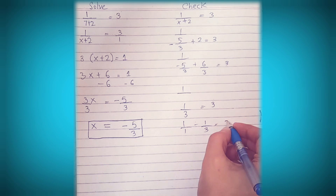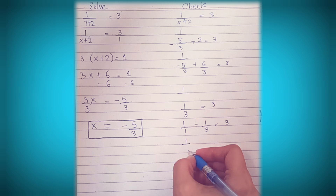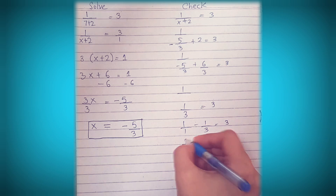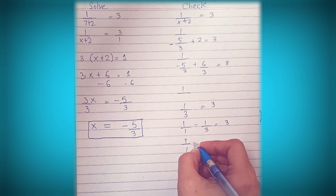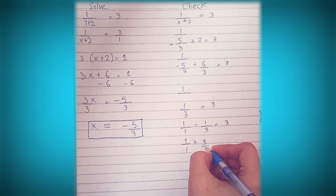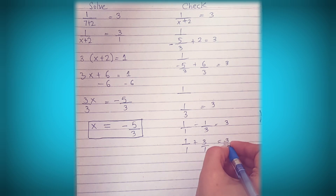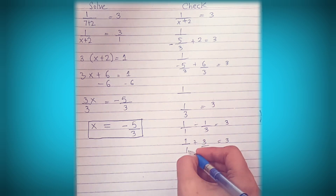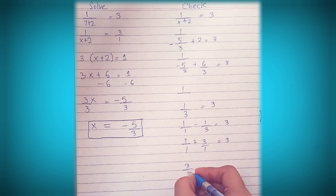So now we have 1 over 1 third. This big line means division, so we have 1 divided by 1 third. We cannot divide fractions directly, so we have to flip the second fraction and change to multiplication.